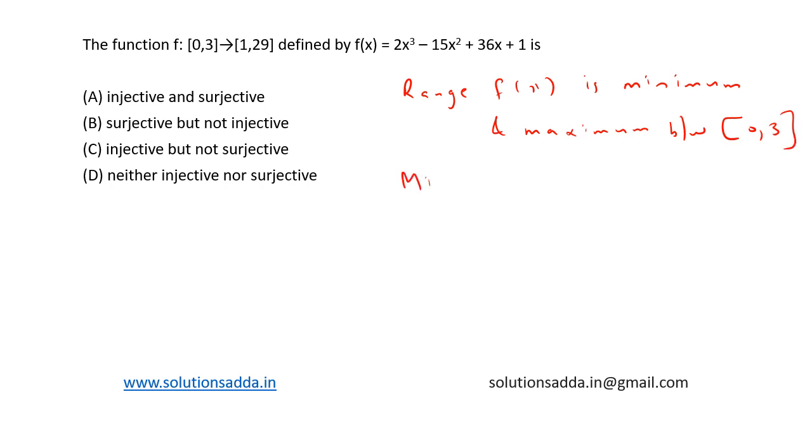So minimum value is 1 at x = 0, and maximum value is 29 at x = 2.